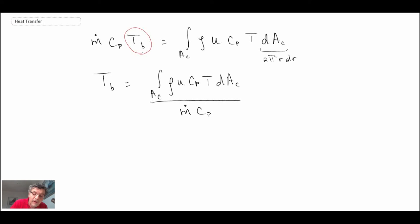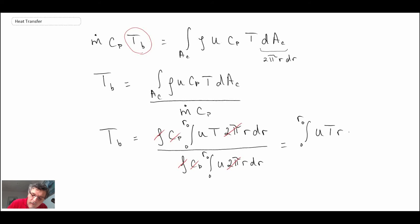I'll pull the ρ and the c_p out of the integral in the numerator. Notice here we have a 2π and a 2π that cancel, we have a ρ and a ρ, a c_p and a c_p, so all those cancel.